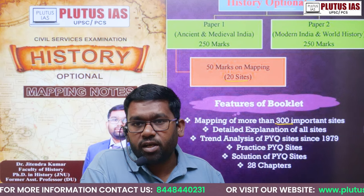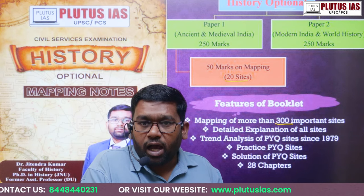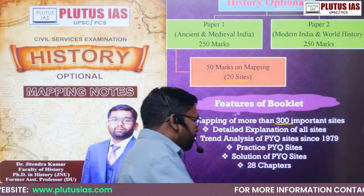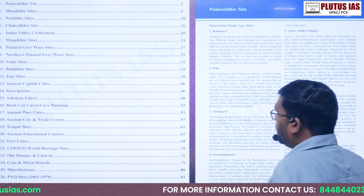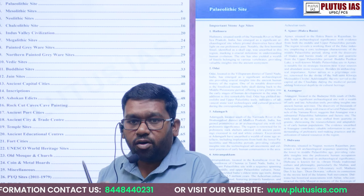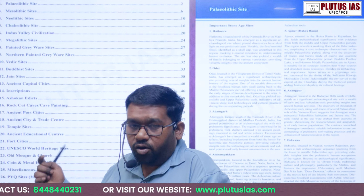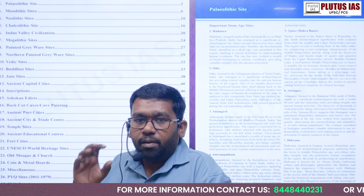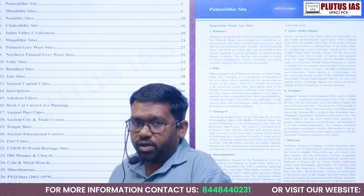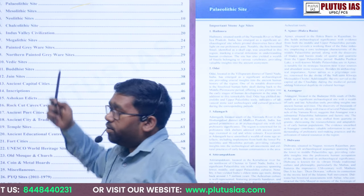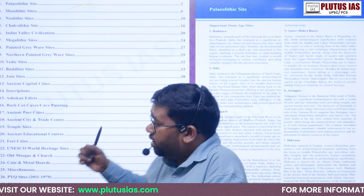In our history optional mapping booklet, we have identified all these sites and divided the content into 27 chapters. For example, chapter one is the paleolithic period. In this paleolithic sites chapter, we have included about 35 sites. Each site has a detailed explanation — you can see this on the board here.